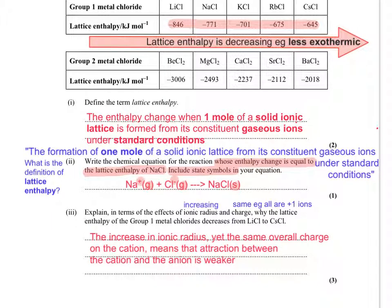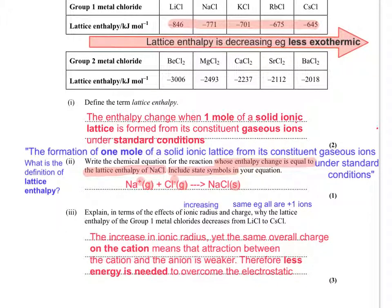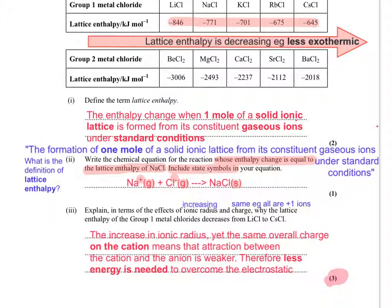So the increase in ionic radius, yet the same overall charge on the cation, means that attraction between the cation and the anion is weaker. So as such, less energy is needed to overcome the electrostatic attractions between them. So because that was three marks, I thought I'd go into a bit more detail to try and justify where those marks might come from. So let's move the page down to check if there's any more questions I need to answer on this screen. So having checked the original script, it seems there's even more on this page, so we can go straight on to the next one.